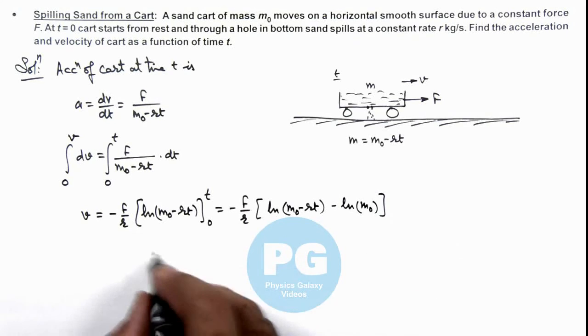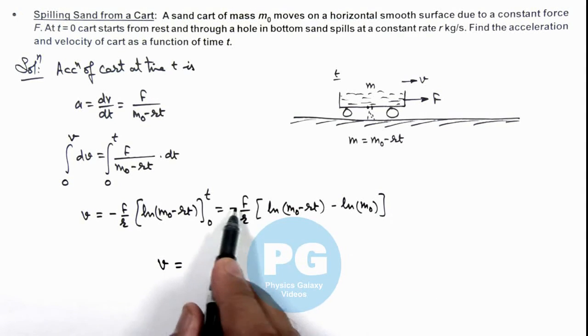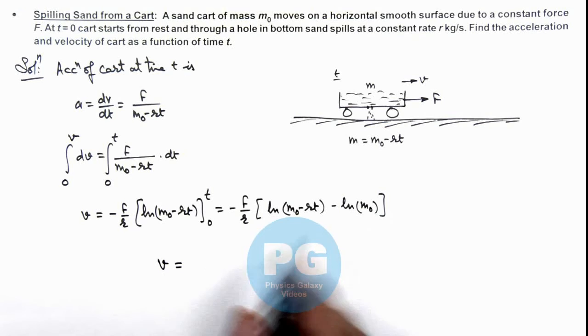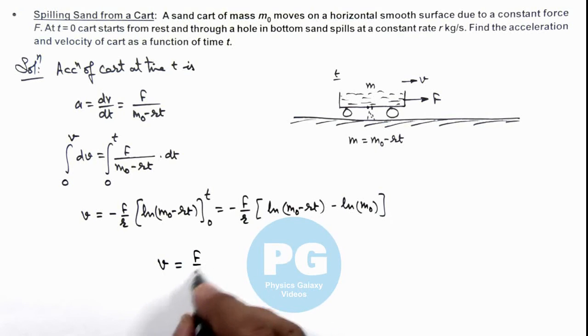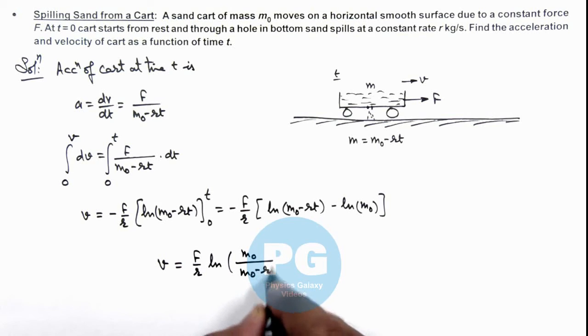So on further simplifying the value of v, we can take this negative sign in, and this gives us (F/r) ln(m₀/(m₀ - rt)).